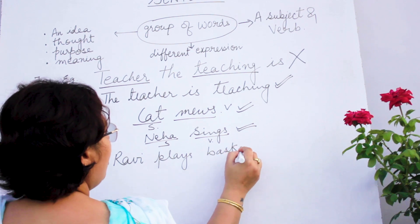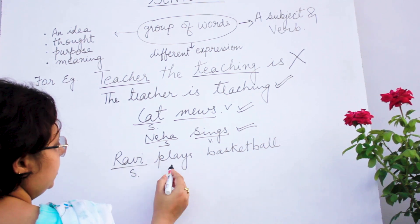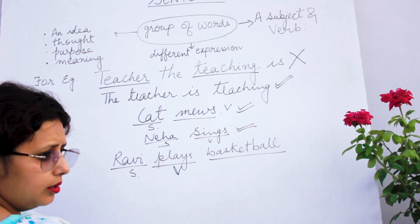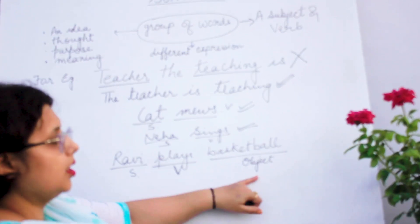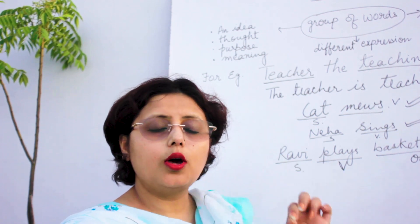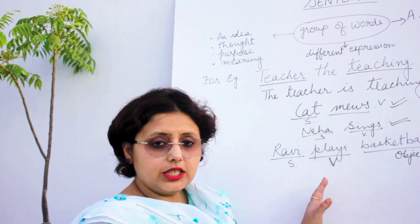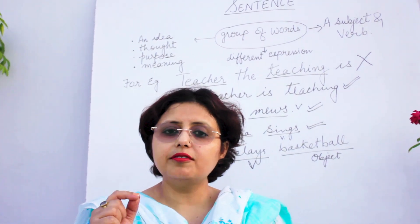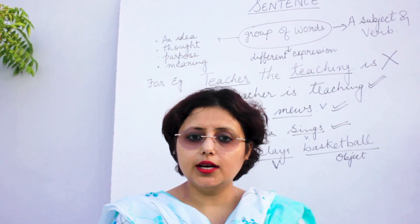Ravi plays basketball — Ravi is the subject doing the work of playing, plays is the verb, and basketball is the object. A sentence should always have a subject and a verb to be called a complete sentence. A sentence is a group of words set in a proper grammatical way.